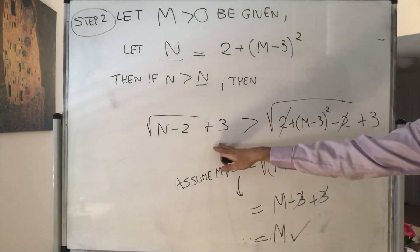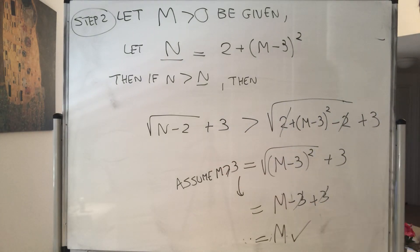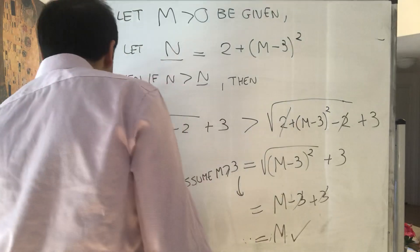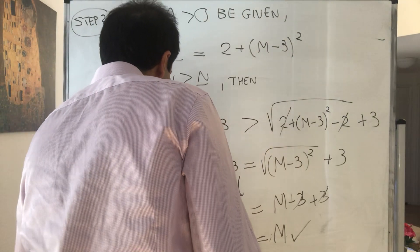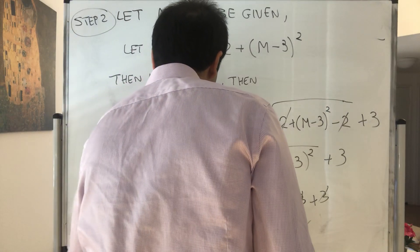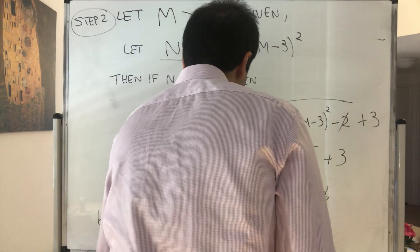So, eventually, this sequence is bigger than m, and therefore, we can conclude limit n goes to infinity of square root of n minus 2 plus 3 is infinite.